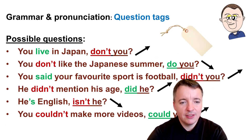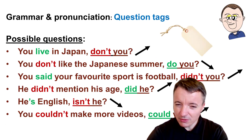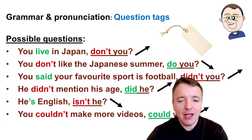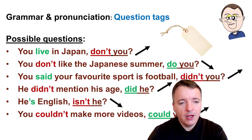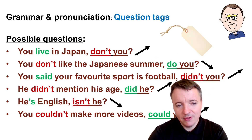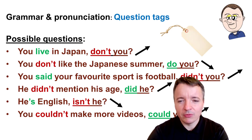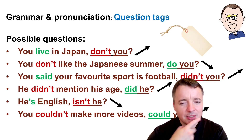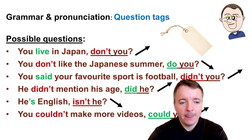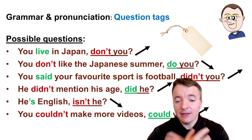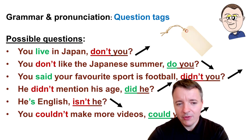Here are some possible questions you could ask. You live in Japan, don't you? — I didn't say Japan, I said Asia, so maybe you're not sure, checking. You don't like the Japanese summer, do you? — maybe you're more sure because I definitely mentioned the summer. You said your favourite sport is football, didn't you? — you're checking because maybe I said soccer. Tom, he didn't mention his age, did he? — no, I kept it a secret.